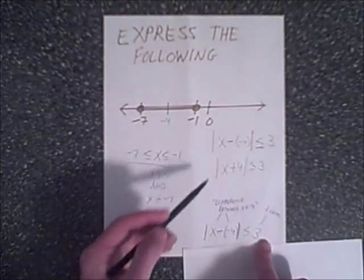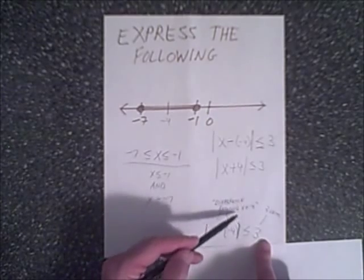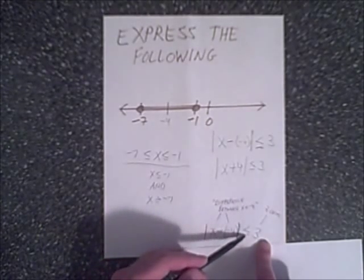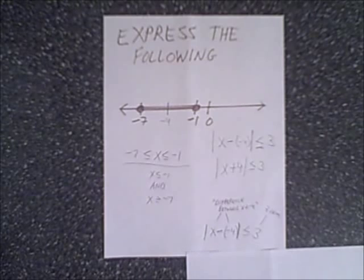And again, it's just a statement. The difference between x and negative 4 must be less than or equal to 3 units.